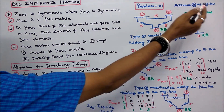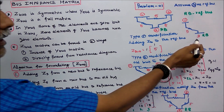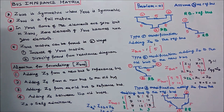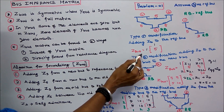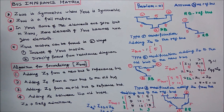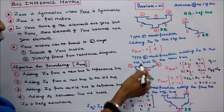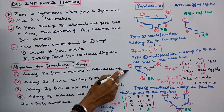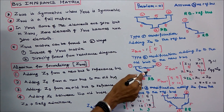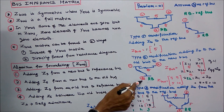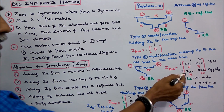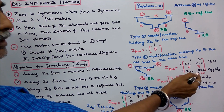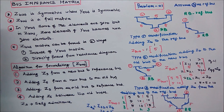Case 2: assume bus 3 as the reference bus. We are going to connect new bus 1. This is Type 1 modification — adding ZB to the reference bus. Therefore Z bus is equal to [1], Z11 is equal to 5. Type 2 modification: adding ZB from the old bus to the new bus. Bus 1 becomes the old bus and we add new bus 2. ZB is equal to 5. Z bus becomes [Z11, Z12; Z21, Z22]. Here Q is equal to 1. Z22 is equal to Z11 plus ZB, that is 5 plus 5 equal to 10. This is the Type 2 modification.